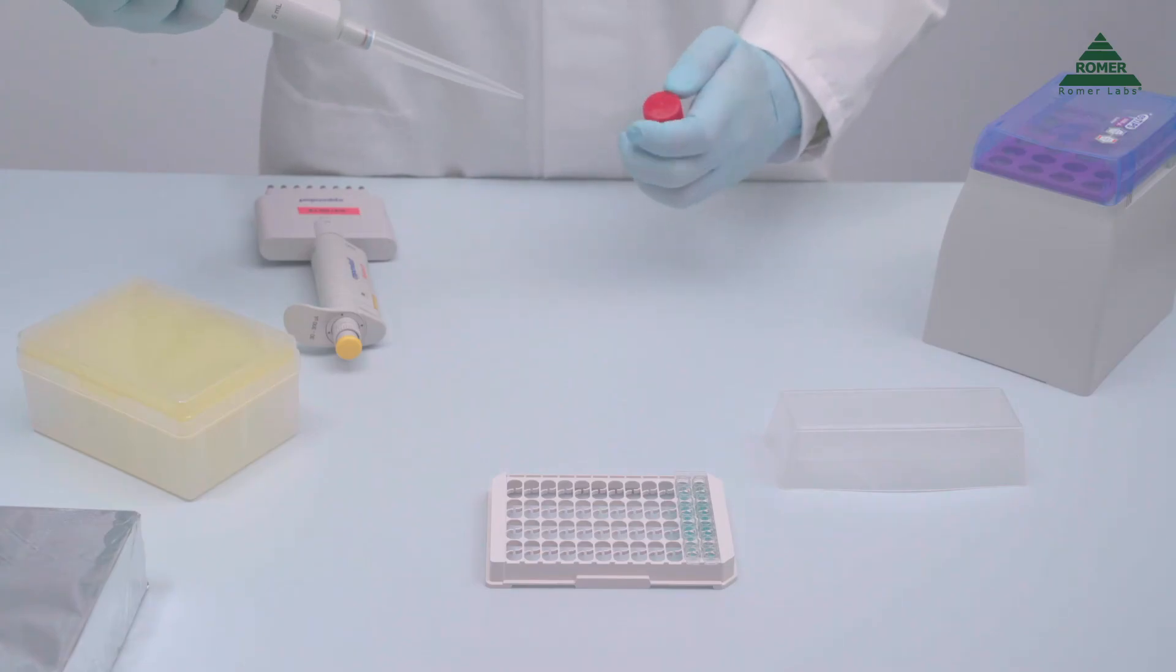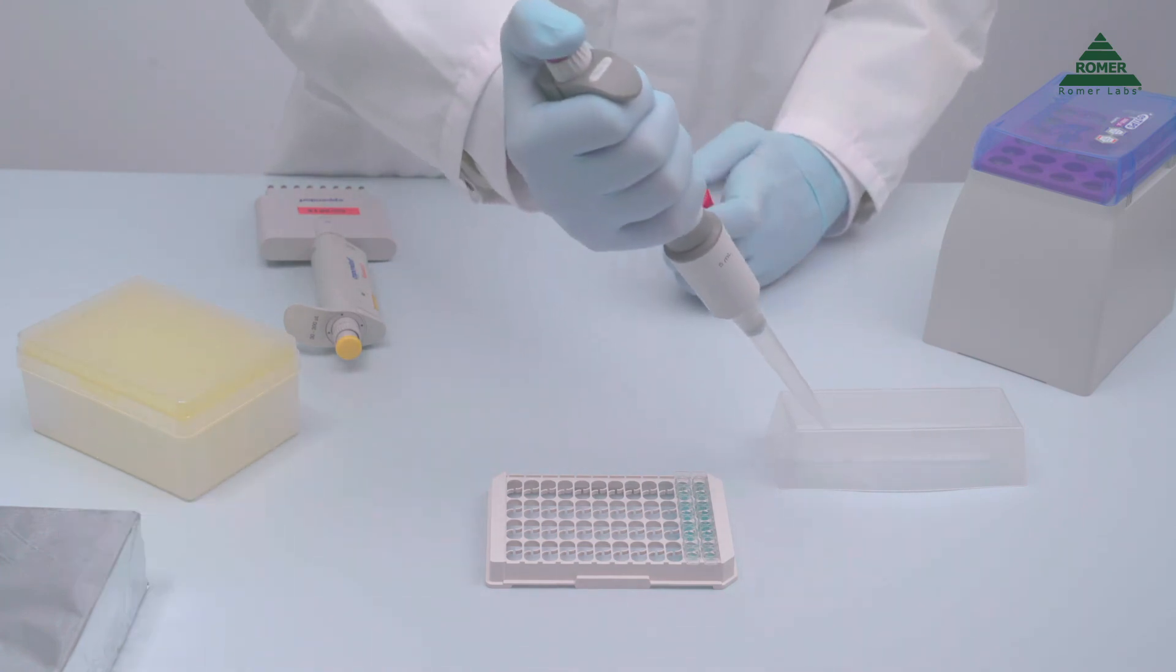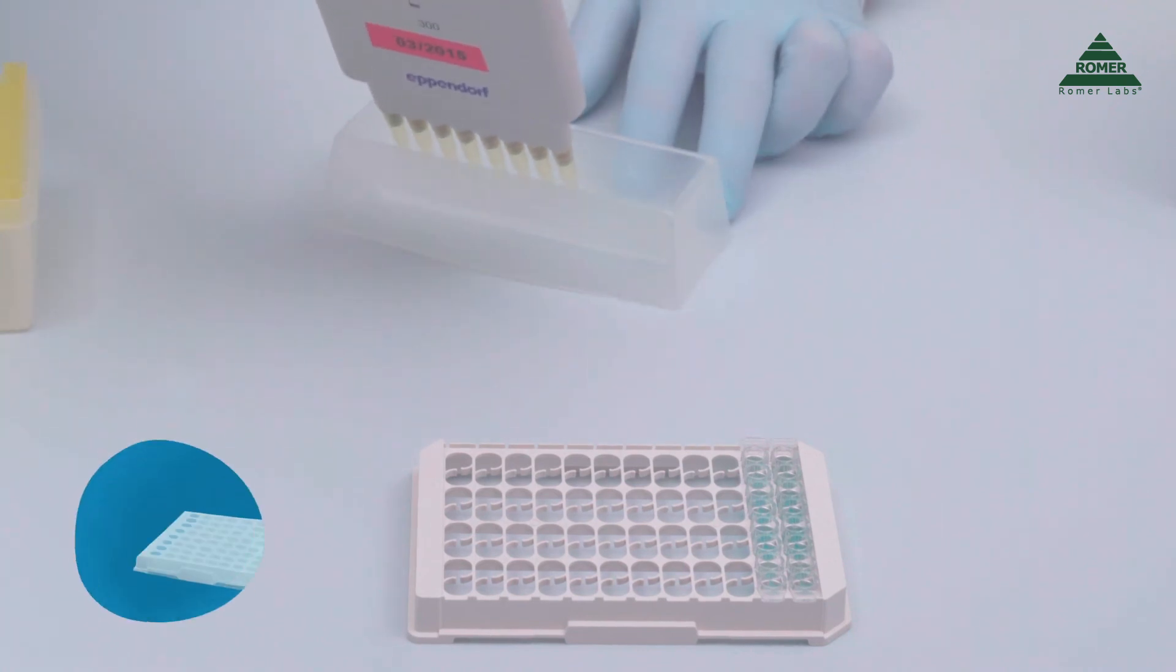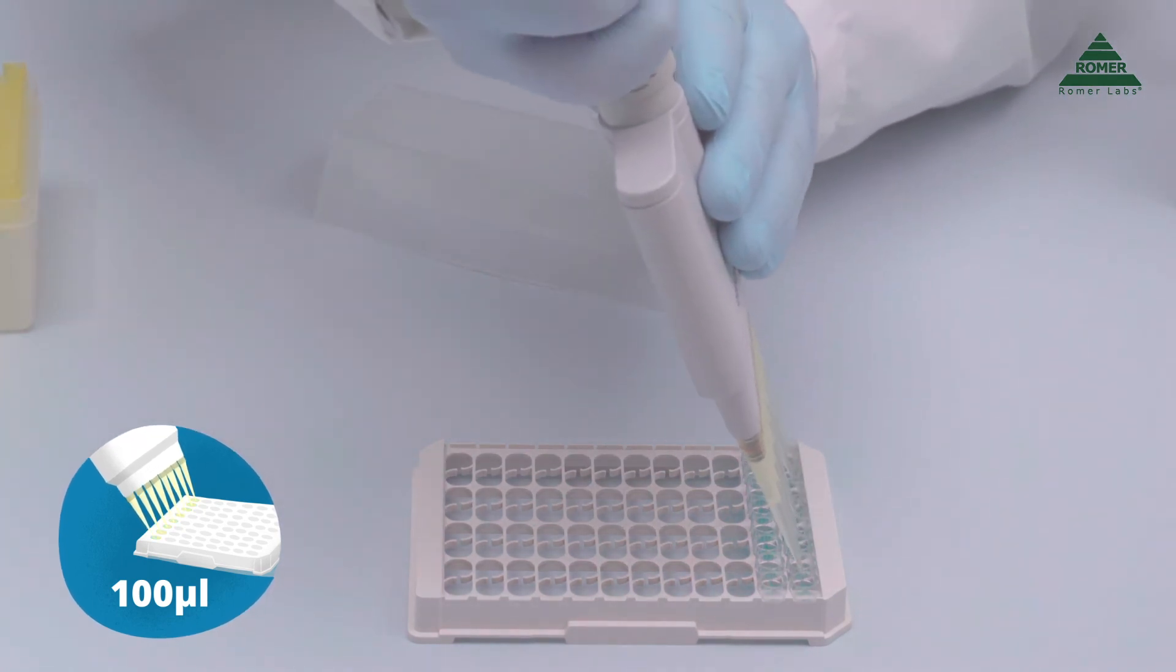Pipette the required amount of stop solution into a reagent reservoir. You need approximately 120 microliters per well. Stop the reaction by pipetting 100 microliters of stop solution into each microwell using an 8-channel pipette. The color will change from blue to yellow.